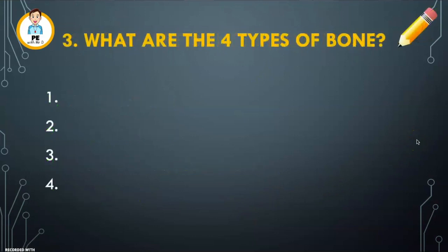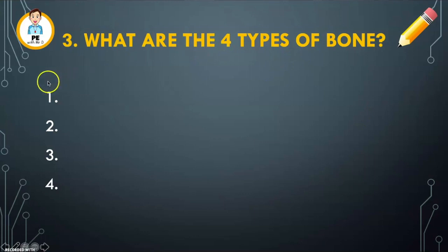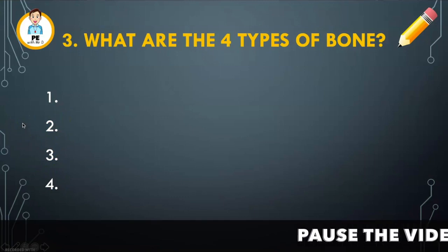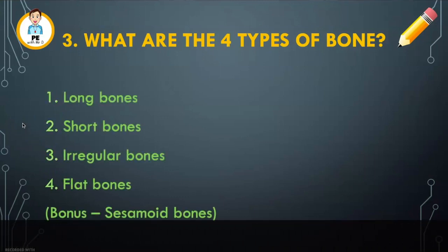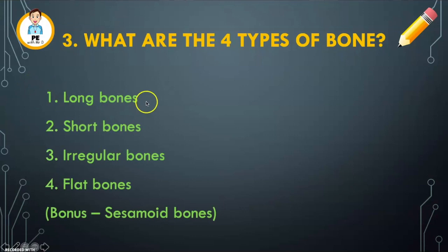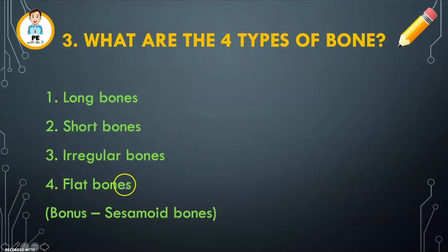Our third and final review question: what are the four different types of bones? With your piece of paper, write one, two, three and four and fill in the blanks. Number one, we have long bones. Number two, short bones. Number three, irregular bones. And number four, flat bones.